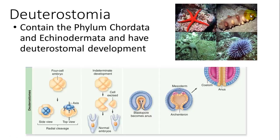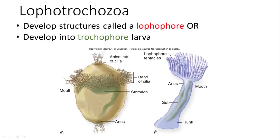Deuterostomes have deuterostomal development and contain the phyla Chordata and Echinodermata. Sea urchins are used as a developmental model because they are also deuterostomes, and studying them is very similar to our own development at early stages. Lophotrochozoans are another group, defined by having a lophophore or a trochophore larval stage — here's the trochophore larva and the lophophore structure, which is part of that larval stage.